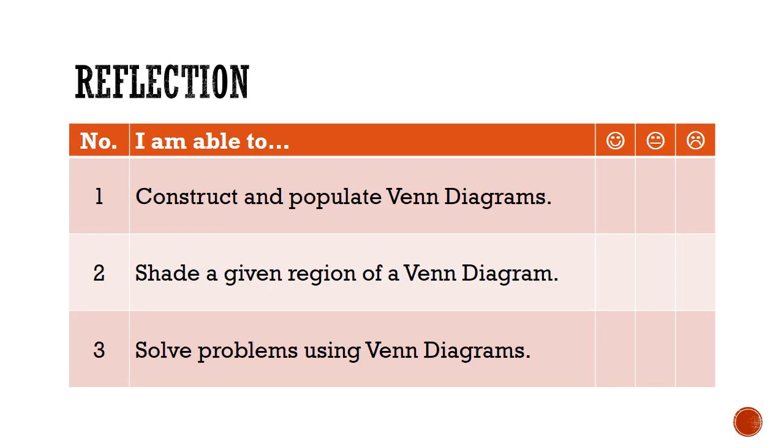Finally, let's go back to our success criteria. Are you now able to construct and populate Venn diagrams? Are you able to shade a given region of a Venn diagram? And are you able to solve problems using the Venn diagrams? If you have still any concerns about any of the success criteria, please leave a comment in the comment section below.